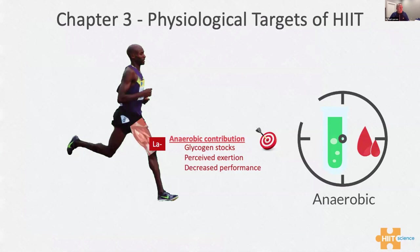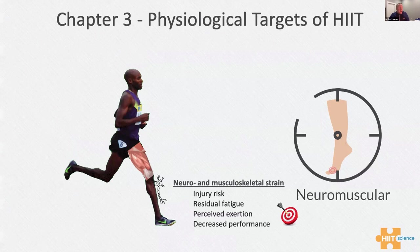Moving to the second target — the anaerobic contribution, our lactic response. This is important because it depletes glycogen stocks, influences subsequent sessions, causes changes in perceived exertion — you feel the burn — and can result in lowered performance in subsequent sessions. The third and less understood, hard-to-quantify aspect of HIIT is the neuromuscular and musculoskeletal strain. This is really important because it affects injury risk, fatigue, quality of your session, perceived exertion, and performance.